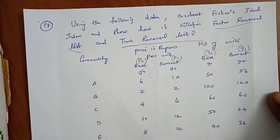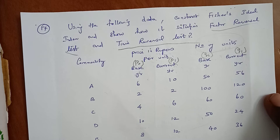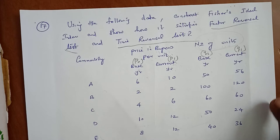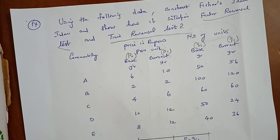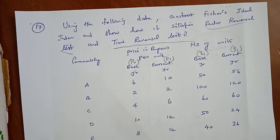Sum number 17. Using the following data, construct the Fischer's ideal index number and show that it satisfies the factor reversal test as well as the time reversal test. So in this problem, first we have to compute the Fischer's ideal index number, and finally we have to prove the factor reversal test as well as the time reversal test.